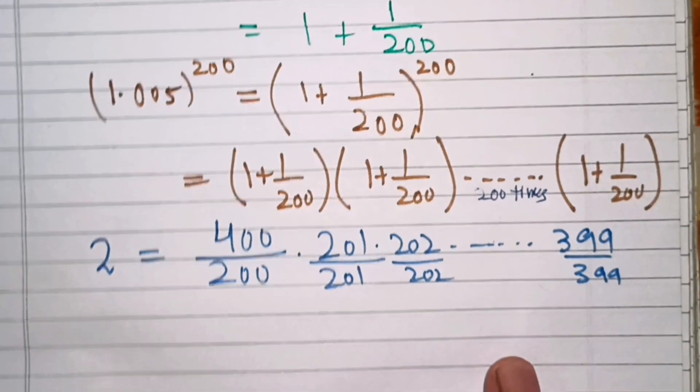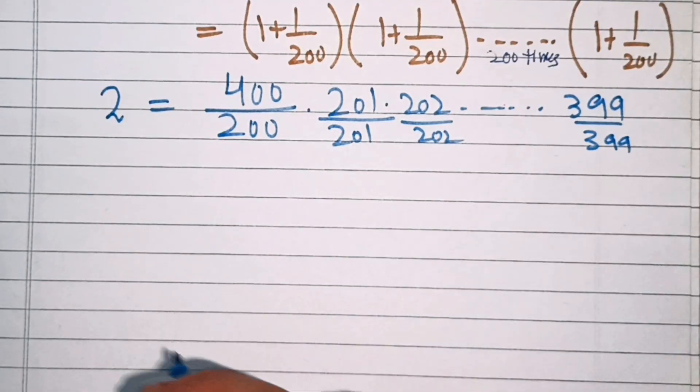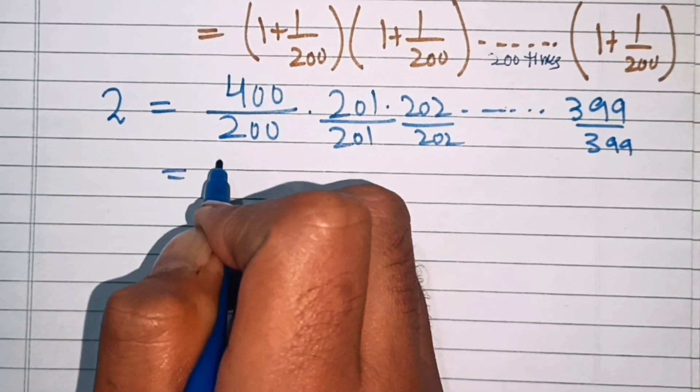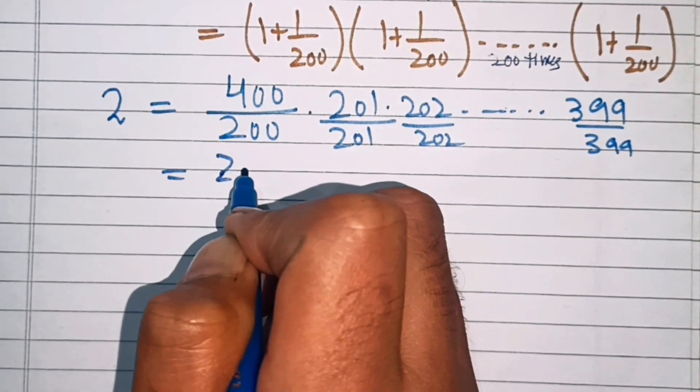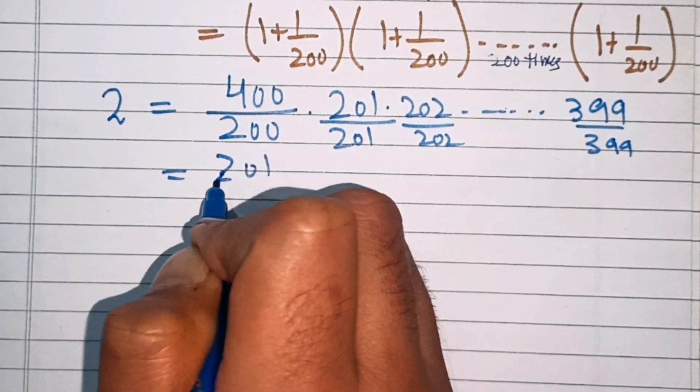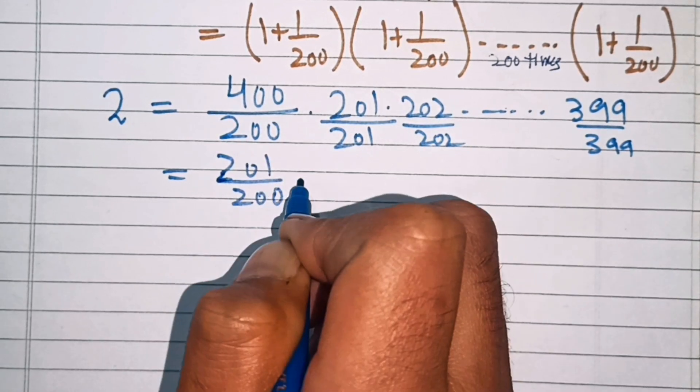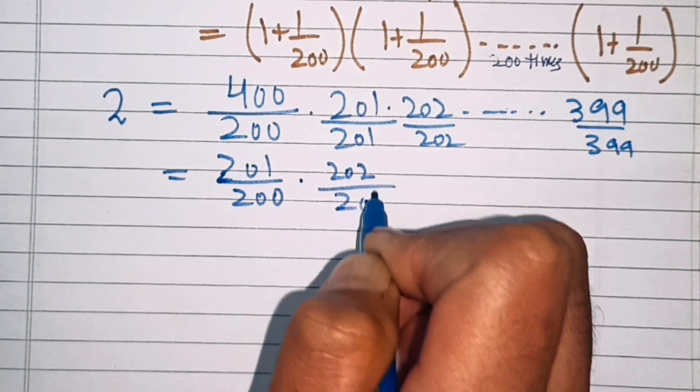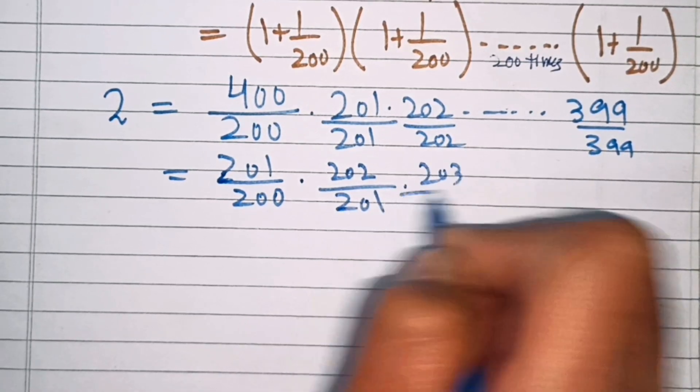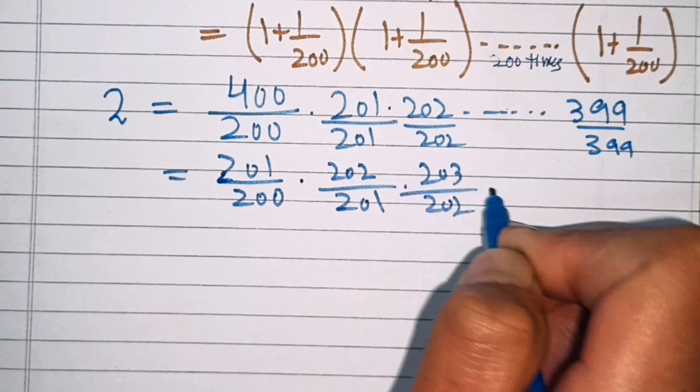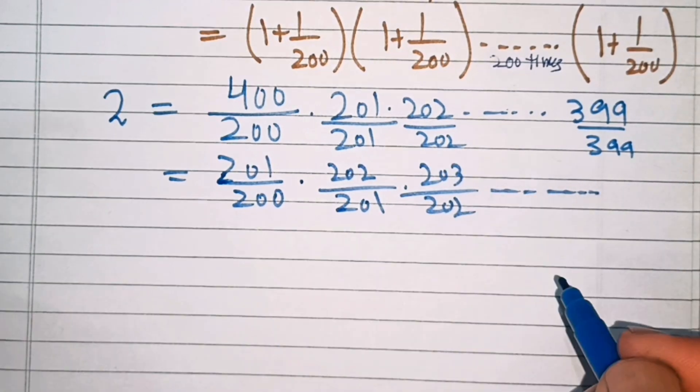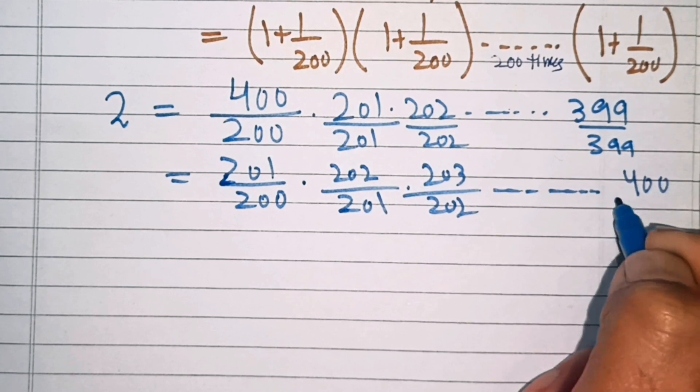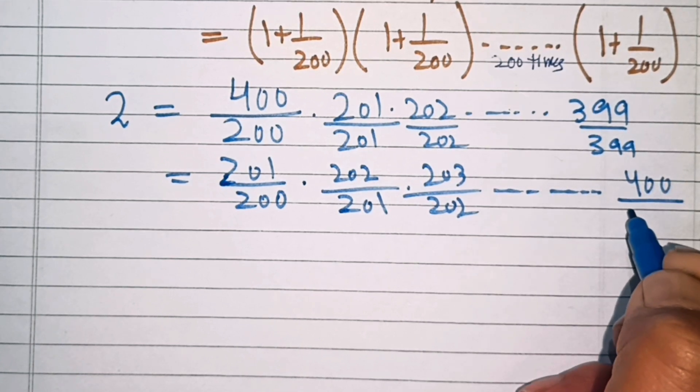After that, we will write these numbers in the sequence. That is, this is equal to 201 over 200, then 202 over 201, then 203 over 202, and so on, up to, in the numerator, the last number is 400, and here the last number is 399.